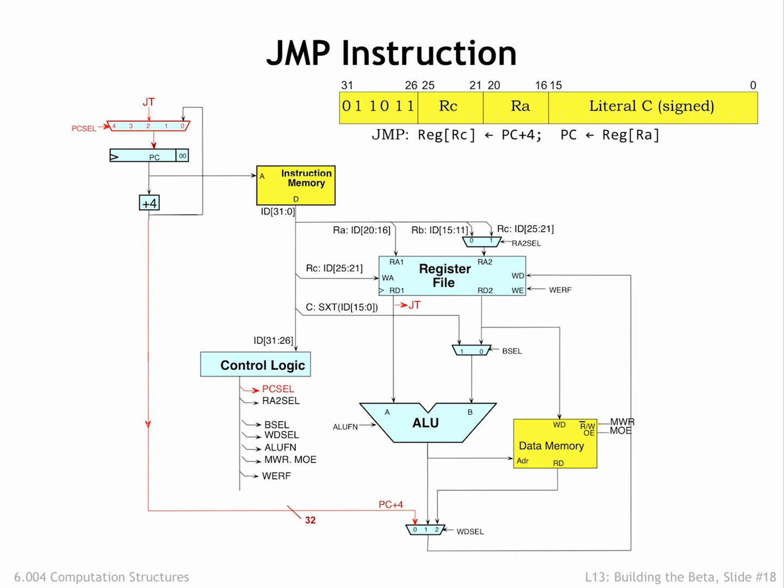When PC cell is 0, the incremented PC value is chosen. When PC cell is 2, the value of the RA register is chosen. We'll see how the other inputs to the PC cell mux are used in just a moment.